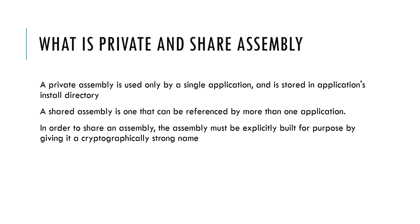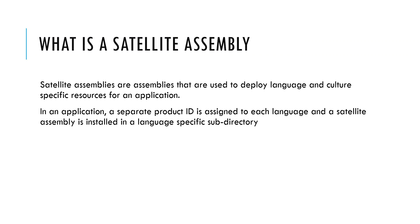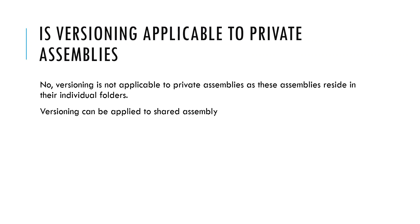What is the difference between private assembly and shared assembly? A private assembly is used only by a single application. A shared assembly is used by multiple applications. What is a satellite assembly? Satellite assemblies are assemblies used to deploy language and culture-specific resources for an application. A separate product ID is assigned to each language, and a satellite assembly is installed in a language-specific subdirectory. Is versioning applicable to private assemblies? No — versioning is not applicable to private assemblies as these assemblies reside in the same project directories.